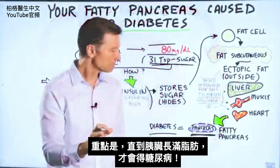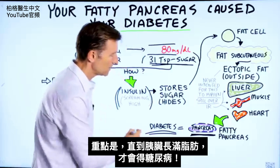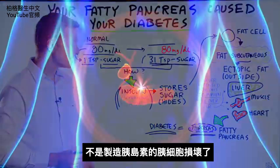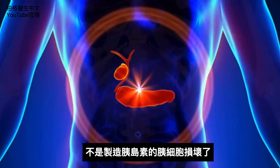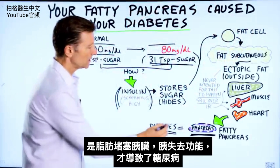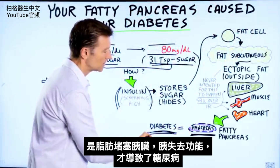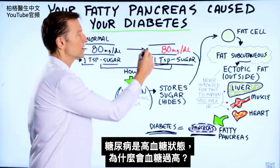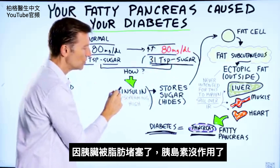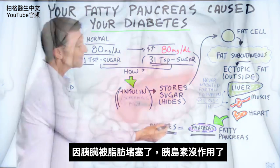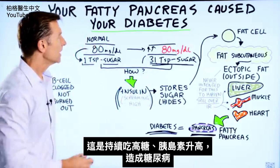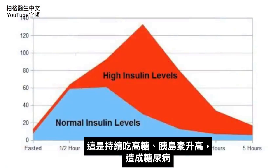Here's the big point: you won't really develop diabetes until the pancreas starts filling up with fat. It's not that the cells of the pancreas that make insulin are burning out — the pancreas is being clogged up with fat, and that is what's creating the dysfunction causing the diabetes. Diabetes is a state where blood sugars go too high and become out of control. Why? Because you lose insulin function because your pancreas is clogged up. This entire cascade happens if you continue to eat too much sugar and insulin stays too high.